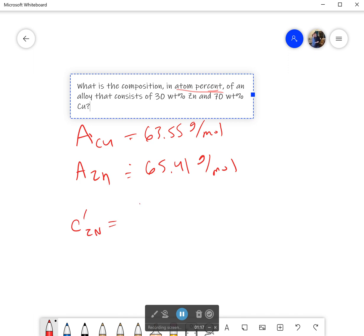Atom percent is going to be my composition in weight times the atomic mass of copper, all over composition of zinc times atomic mass of copper plus composition of copper times atomic weight of zinc. That's all times 100.